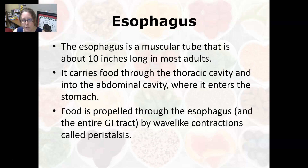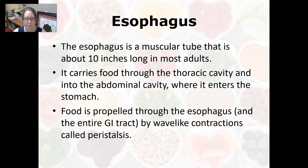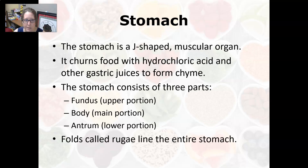The esophagus is a muscular tube about 10 inches long in most adults. It connects the pharynx to the stomach and carries food through the thoracic cavity, past the lungs, and into the abdominal cavity where it enters the stomach. Food is propelled through the esophagus and the entire GI tract by wave-like contractions called peristalsis — similar to squeezing a tube of toothpaste, where it squeezes forward and then releases.